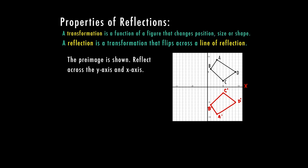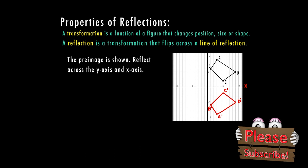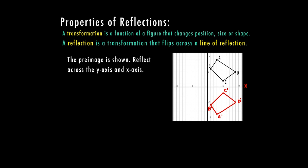If you think about looking at your reflection in a mirror — if you hold your hand up and touch your right ear, in the mirror it looks like your left side. So your image is always going to be flipped. We can see that here: everything has just been flipped over that x-axis.